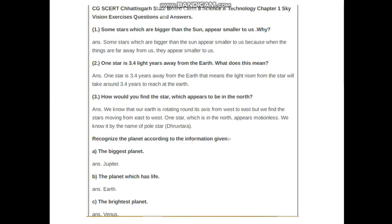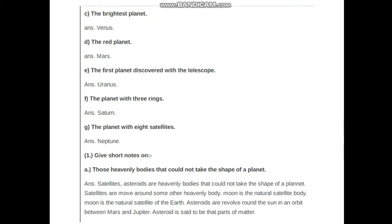Recognize the planet according to the information given. The biggest planet is Jupiter. The planet which has life: Earth. The brightest planet is Venus. The red planet is Mars. The first planet discovered with the telescope is Uranus. The planet with three rings: Saturn. The planet with eight satellites is Neptune.